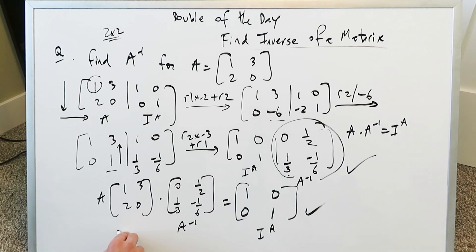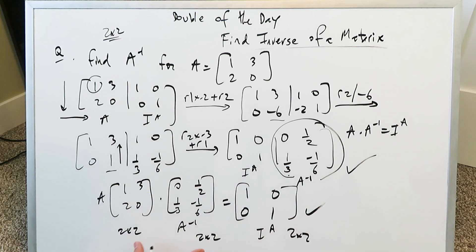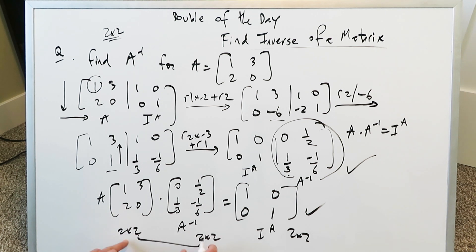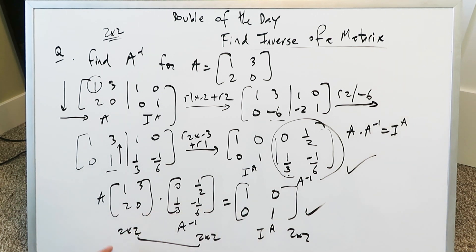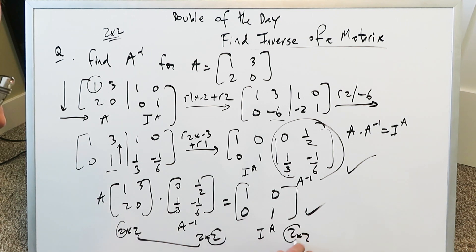Remember, for two by two: when you multiply two matrices you'll get a two by two result. The inner dimensions have to match — if the inner numbers are the same, you can do the multiplication, and the outer numbers indicate the dimensions of your result.